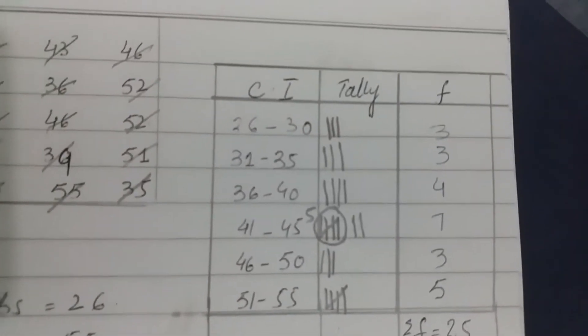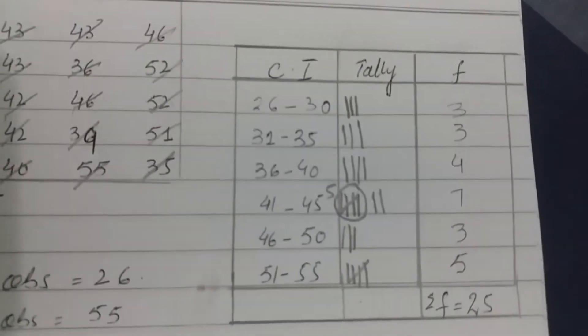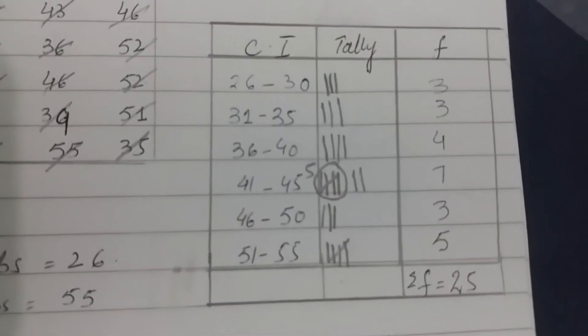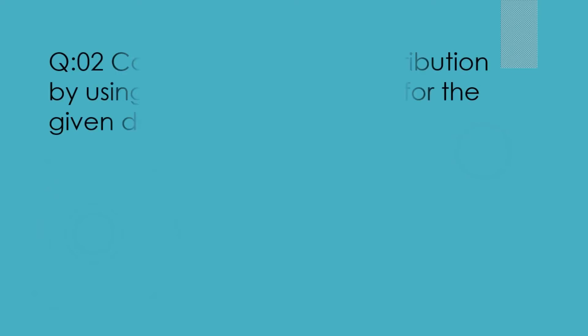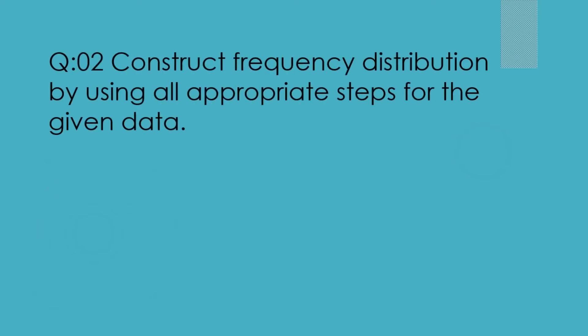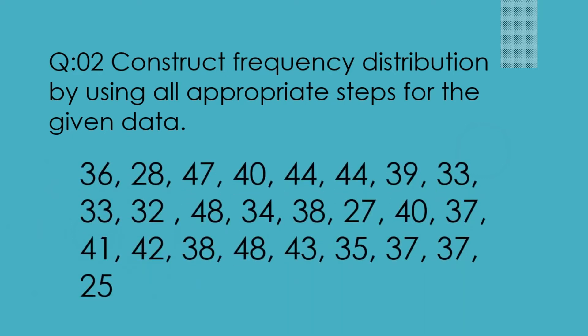This completes the transformation of ungrouped data into grouped data for question one. Now for question two: construct a frequency distribution using all appropriate steps for the given data.